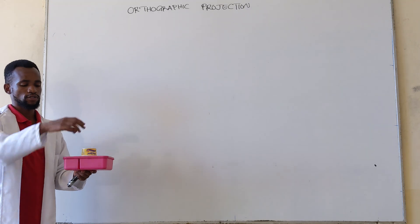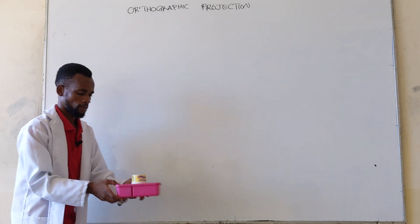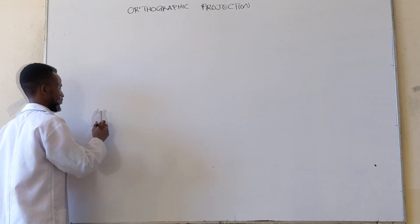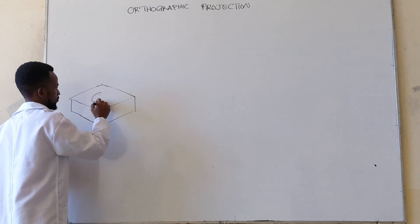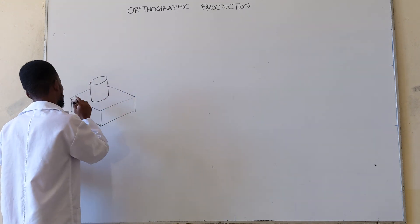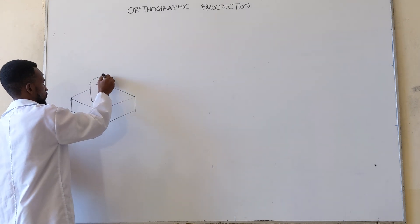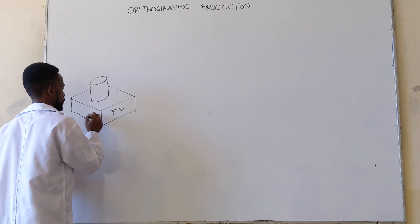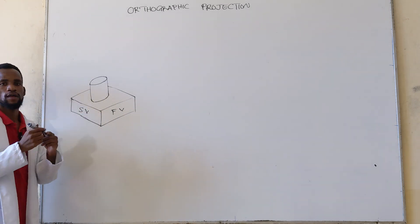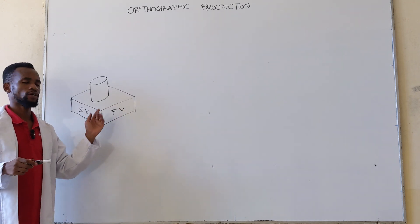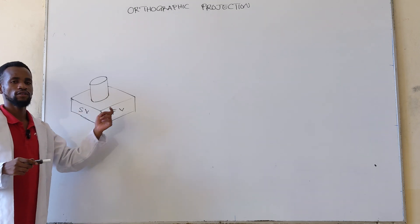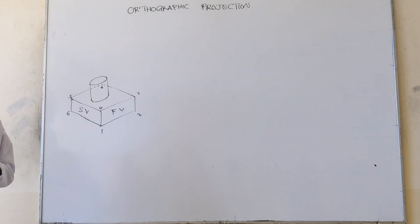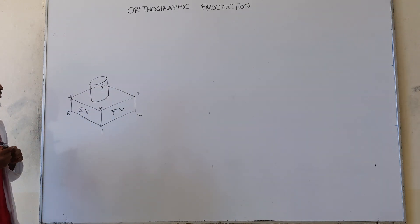For example, you have an object that is like a box with a sitting-down top — so a box and a sitting-down top — and you want to get the views for it. Let's say this is the front view and this is the side view. Either of them can be the front, so if we say this is the front, then this one will be the side.